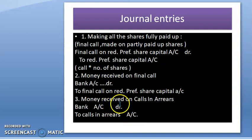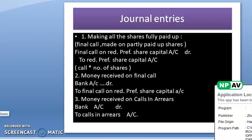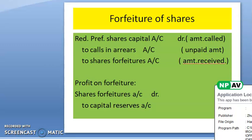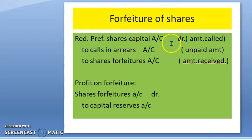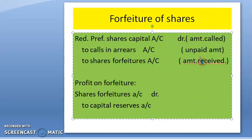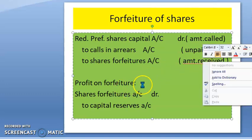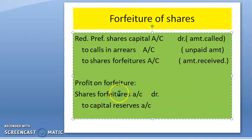If the calls in arrears money is not received, then we will forfeit those shares. For forfeiture of shares, the entry is: Redeemable Preference Share Capital Account Debit — for the amount called — to Calls in Arrears for the unpaid amount, and to Share Forfeiture for the amount already received. Then the profit on share forfeiture — that forfeited value — has to be transferred to reserves. So the entry is: Share Forfeiture Account Debit to Capital Reserves.